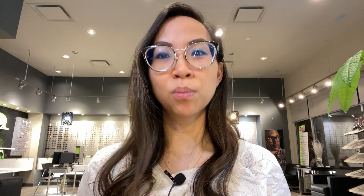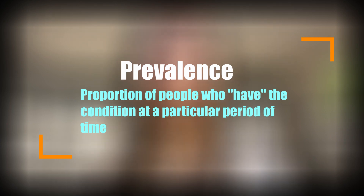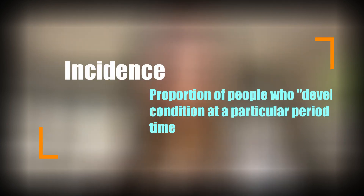Let's define these terms. Prevalence is the proportion of people who have the condition at a particular period of time. Incidence is the proportion of people who develop the condition at a particular period of time. This is precisely the reason why it is important for our children to be seen on a yearly basis. Myopia progression has been studied less compared to the literature surrounding prevalence and onset, but is starting to become very important, as it helps us predict and identify children who will progress towards high myopia.